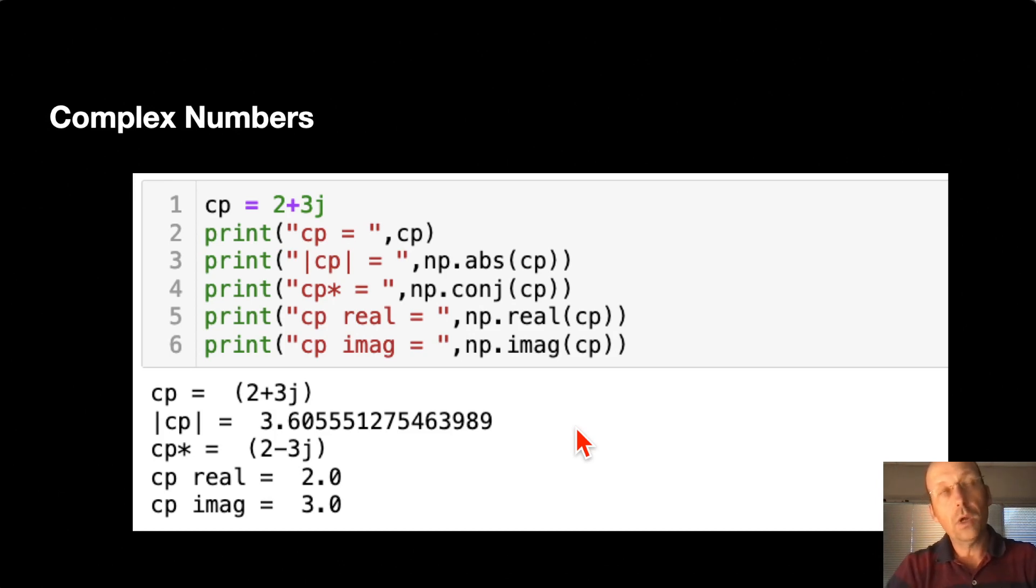Complex numbers. Even if your initial wave function is real, your wave function solution is complex because it has e to the negative i E_n t over h bar. How do you deal with complex numbers in Python? You can write a complex number as just a number plus something j, not times j. If I print that out 2 plus 3j, it prints as 2 plus 3j. If you want to print out the magnitude, it's using np.abs. Then I can get the conjugate, I can print out the real part, I can print out the imaginary part.